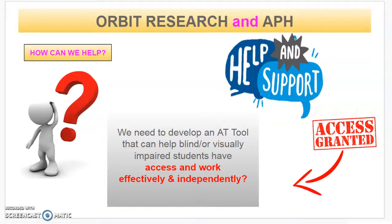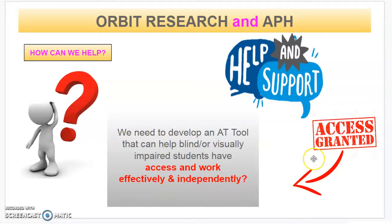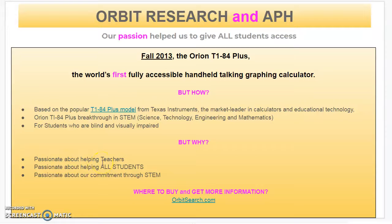Orbit Research and APH asked how they can help — and they have helped and supported. They said we need to develop an AT tool that can help blind or visually impaired students have access and work effectively and independently. Access has been granted. In the fall of 2013, the Orion TI-84 Plus — the world's first fully accessible handheld talking graphing calculator — was invented.